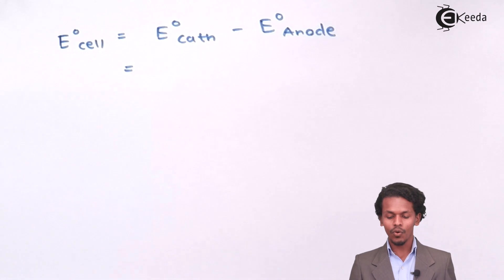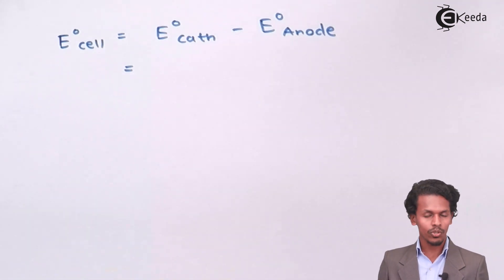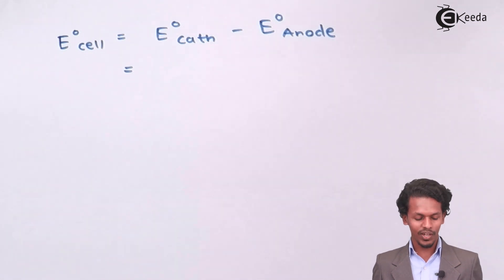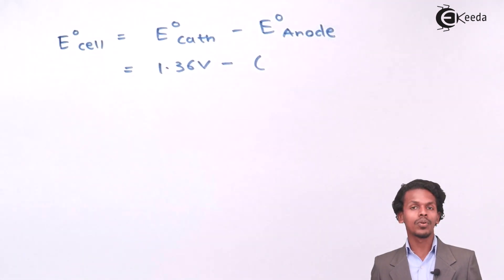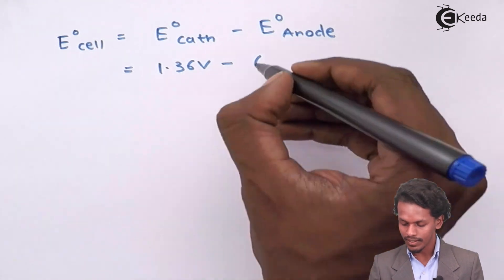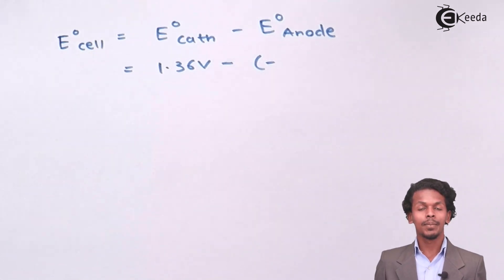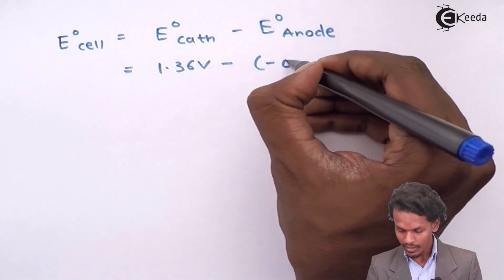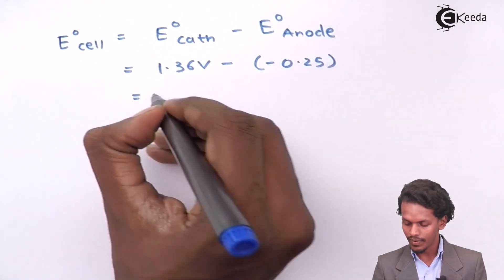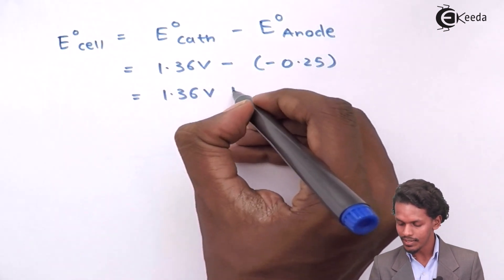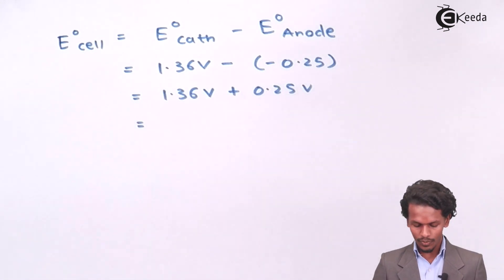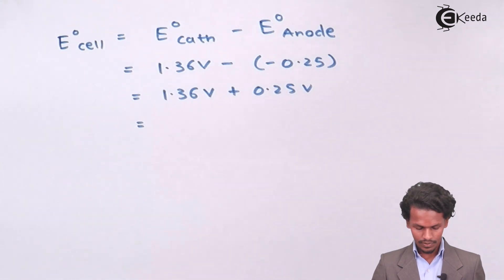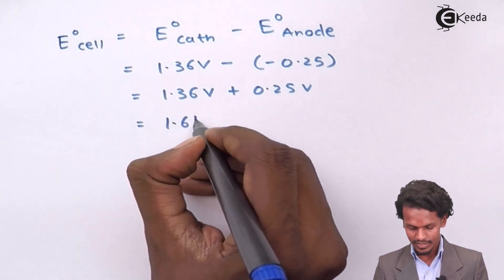The chlorine half-cell is acting as the cathode, so E°cathode = +1.36 V. Nickel is acting as the anode, so E°anode = −0.25 V. Therefore: E°cell = 1.36 − (−0.25) = 1.61 V.